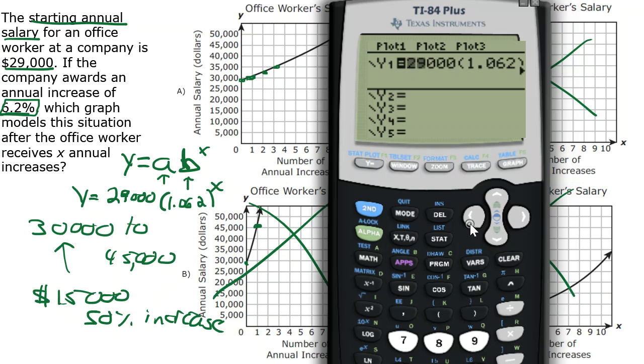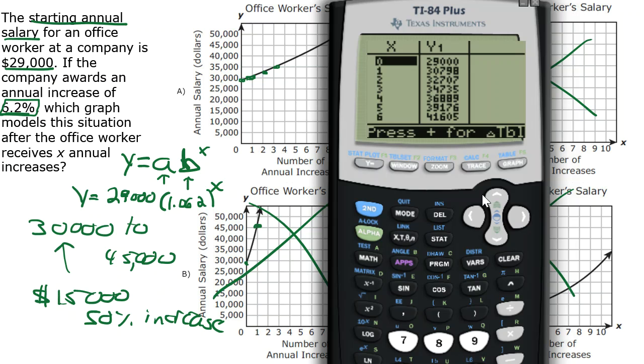If you can write out the function by hand, you can just type it into your Y equals screen. Then we can go to a table by pressing second graph, and we can match the values.